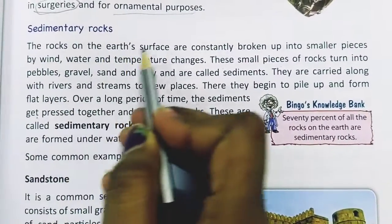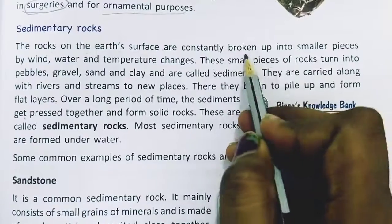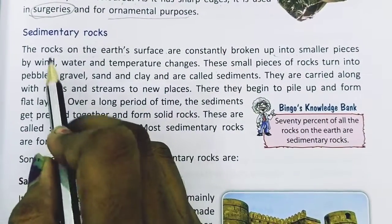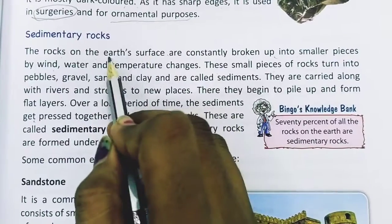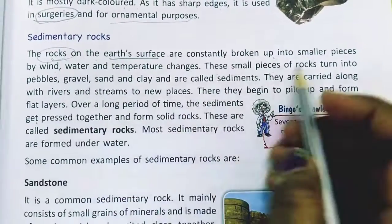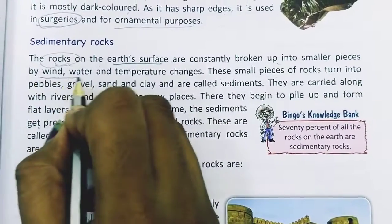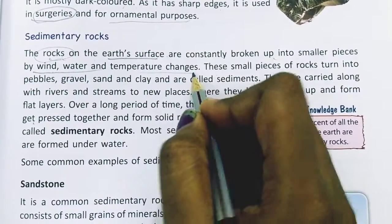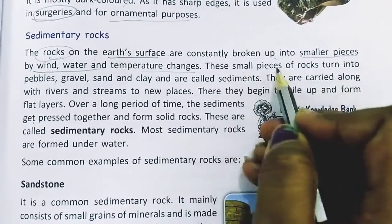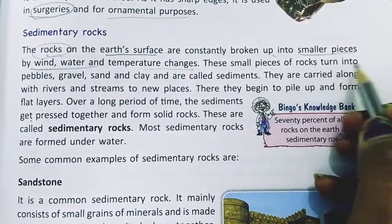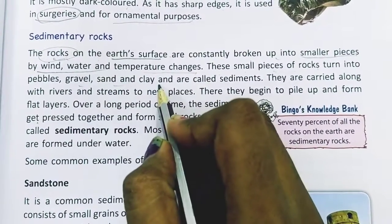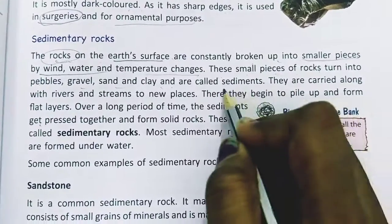The rocks on the earth's surface are constantly broken up into small pieces by wind, water, and temperature. These small pieces of rocks turn into pebbles, gravel, sand, and clay, and are called sediments.